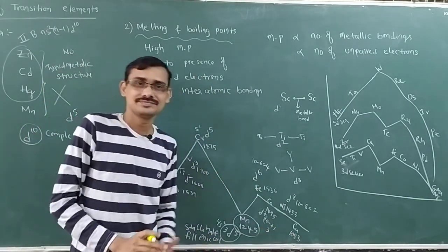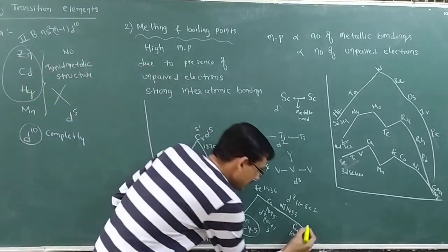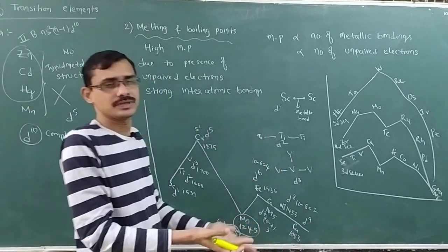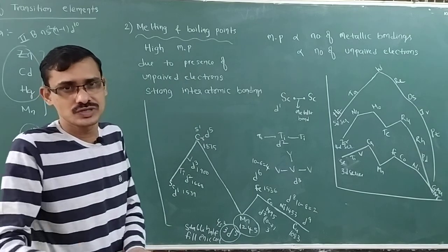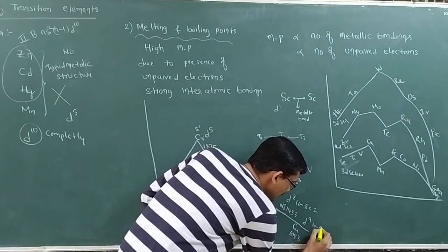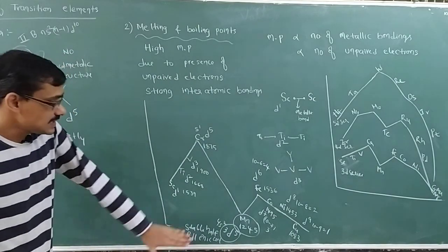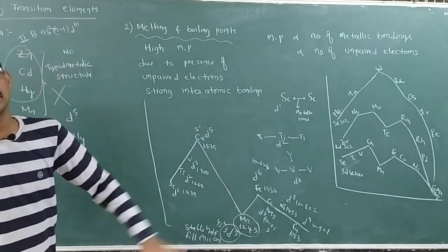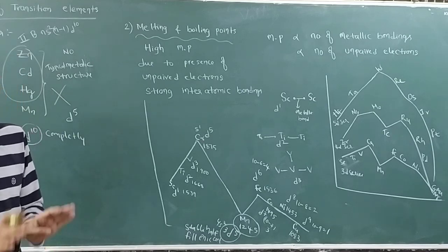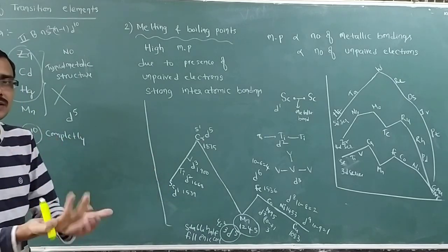Copper has D9 configuration: 10 minus 9 gives 1 unpaired electron. Zinc, cadmium, and mercury are not included here because they are not transitional elements — they have completely filled d10 configuration.